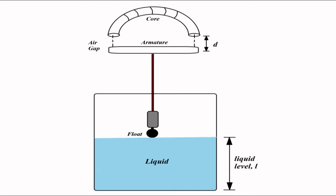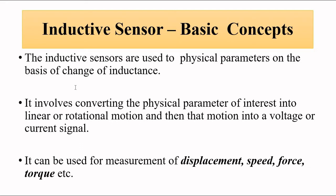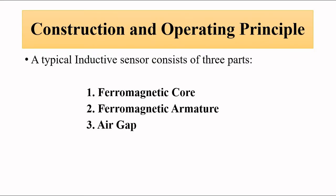Before going into detail, let us discuss the basic concepts related to the inductive transducer. I have already covered this in a separate video on inductive sensors, so I will go through it quickly here. A basic inductive sensor is used for measurement of various physical parameters such as displacement, speed, force, and torque. It is based on the principle of change of inductance, and there are three important parts: the core, the armature — both made of ferromagnetic materials — and the air gap distance, which leads to the change in inductance.